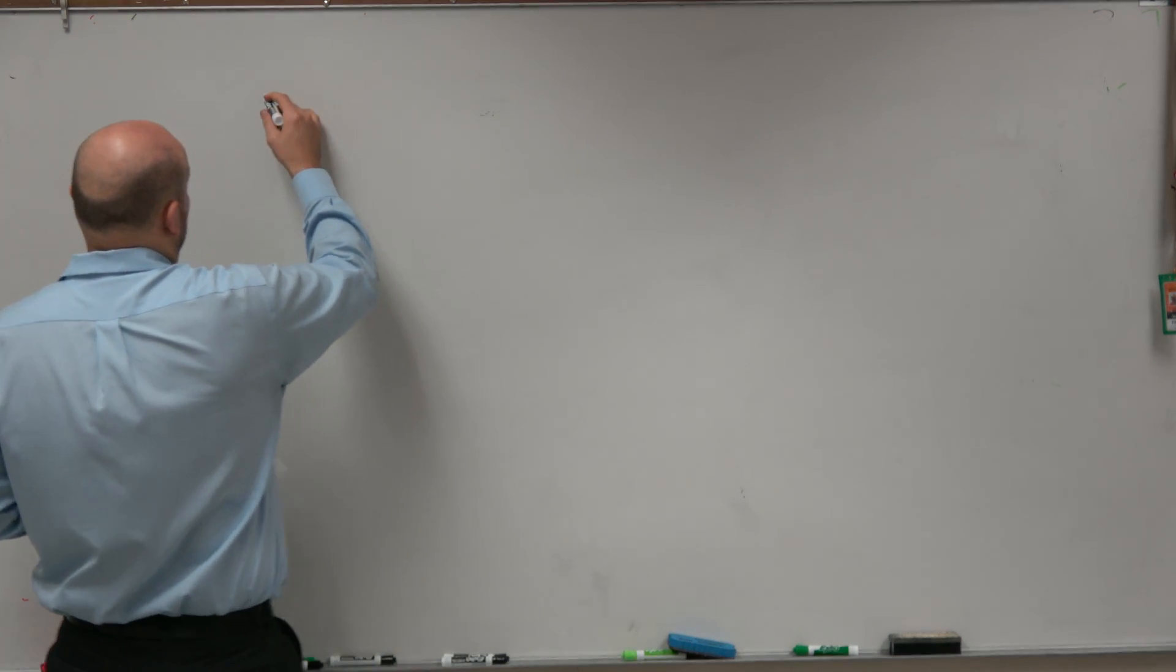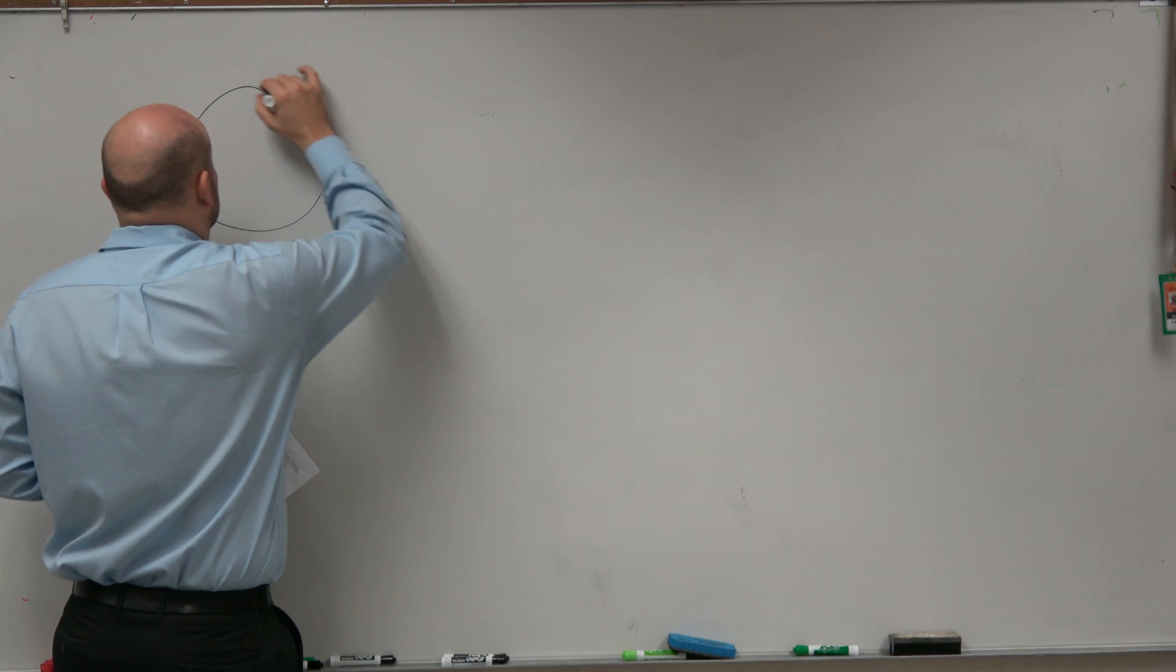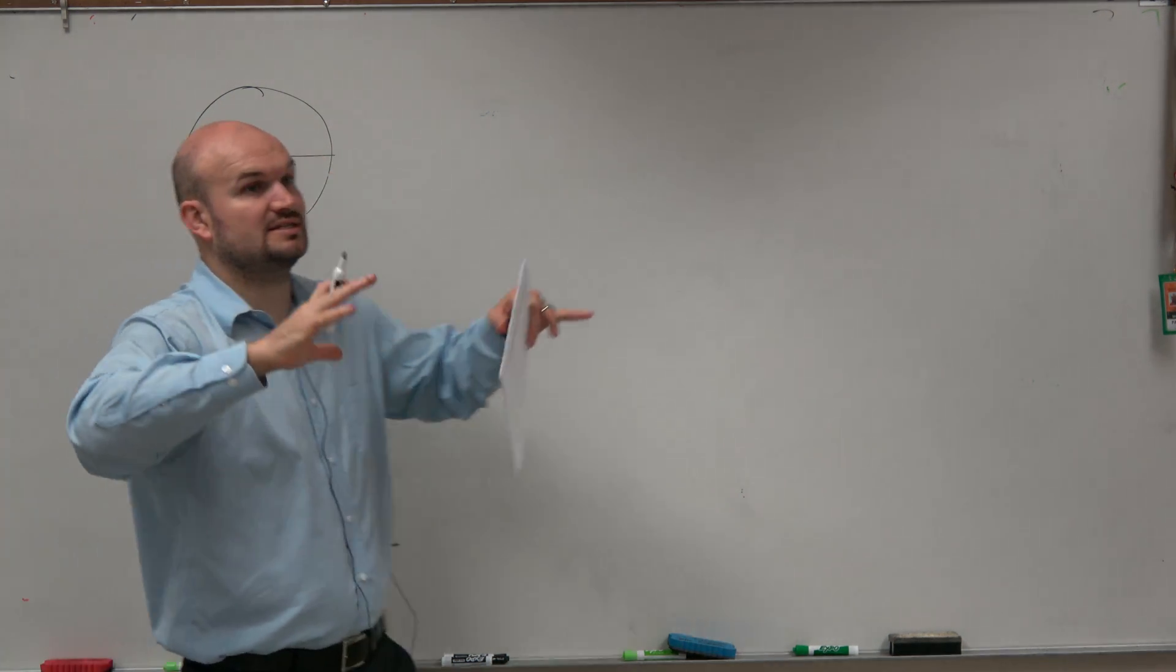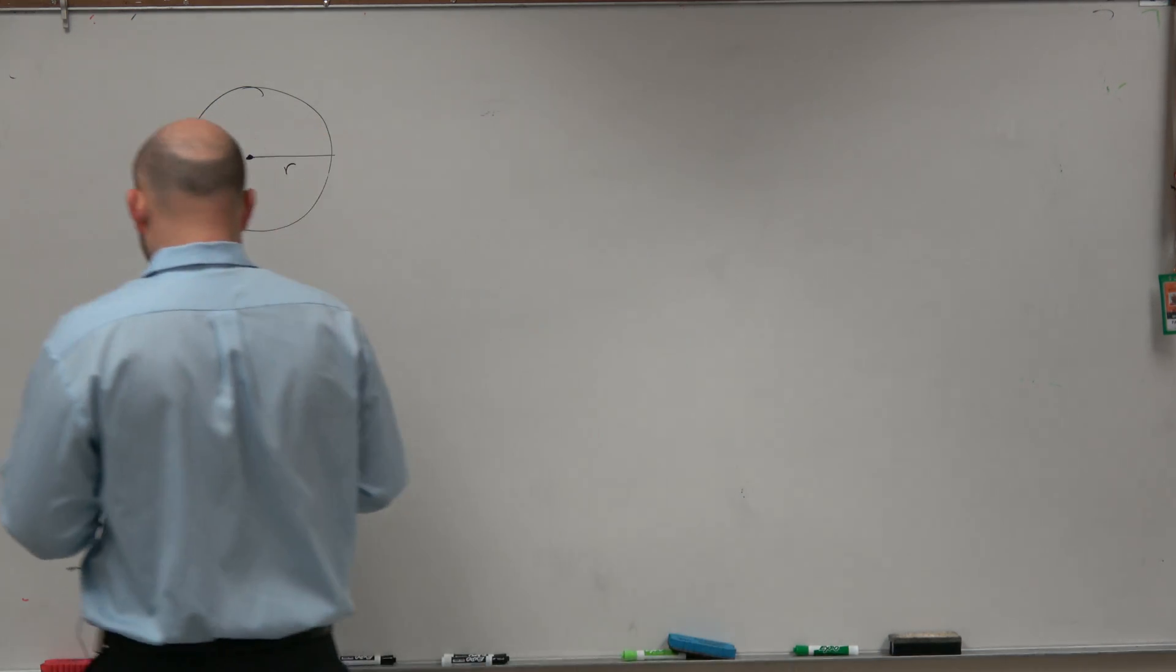So immediately, I am going to draw a circle. I'm going to represent a radius. And I know that this is expanding. And so therefore, I automatically know that I'm going to have dr/dt.